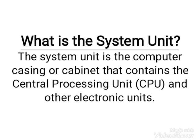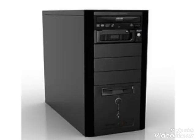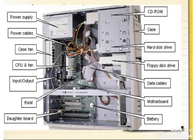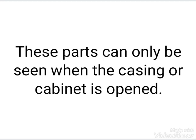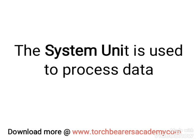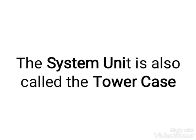To better understand our definition, we will be looking at the image in our next slide. Here we have a picture of the system unit. It looks like some of the DVD players we have at home. It is a box-like case also called the cabinet. Inside this case you have the CPU, which is the central processing unit, known as the brain of the computer. Inside the system unit we also have the motherboard, the ROM, and other electronic components. These components inside the system unit can only be seen when the casing is open. The casing is also called the cabinet. This system unit is used to process data and is also called the tower case.